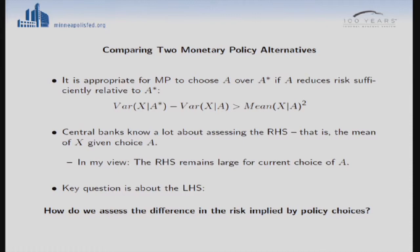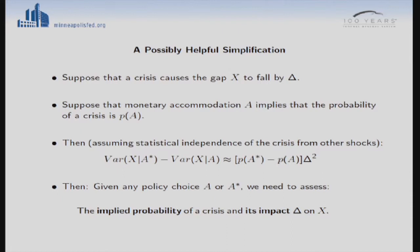Staying very abstract, here's one simplification that could be helpful. Suppose a crisis of some kind causes the gap to fall by some large amount delta. And suppose that the monetary accommodation implies that the probability of a crisis is P of A. We're simplifying so that the impact of the crisis doesn't depend on your choice of accommodation — all that depends on accommodation is the probability of the crisis. With some statistical dependence assumptions, the difference in variance is just the difference in crisis probabilities multiplied by the square of the gap increase delta.